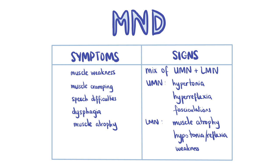On examination, patients will have both upper motor neuron and lower motor neuron signs. It's common to see fasciculations and wasting of small muscles of the hand. Motor neuron disease affects the motor neurons, therefore there will be no loss of sensation on examination. It's important to note that external ocular muscles are not affected in motor neuron disease, and this can be used as a means of communicating in people with advanced MND.